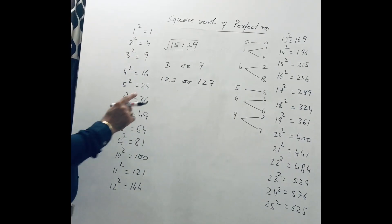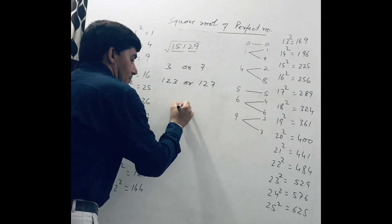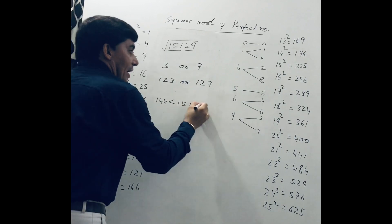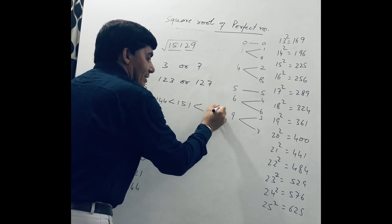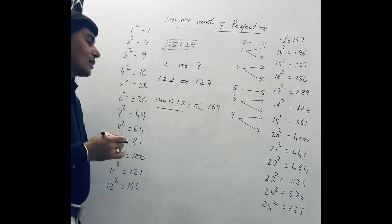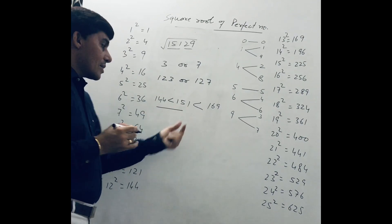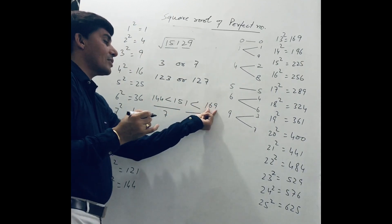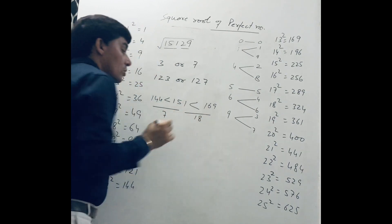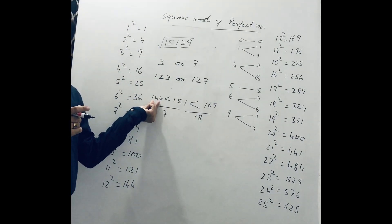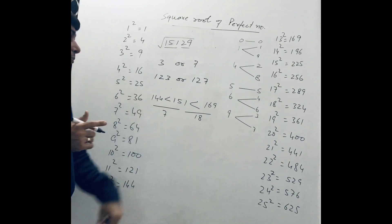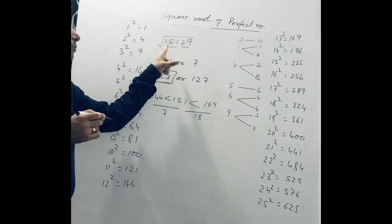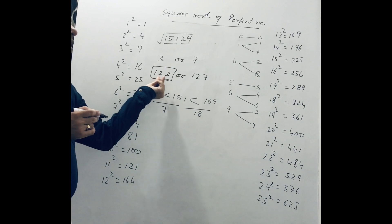Which one is correct? We see 151 is greater than 144 and less than 169. The difference between 144 and 151 is 7, and the difference between 151 and 169 is 18. So 151 is nearer to 144. Therefore, 123 is the right answer — the square root of 15129 is 123.